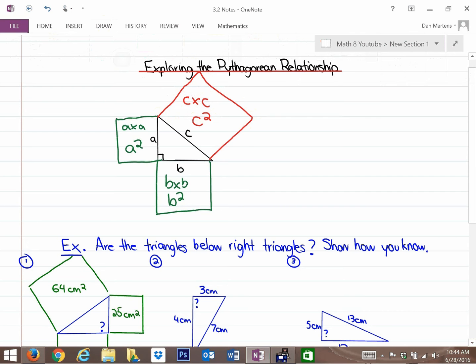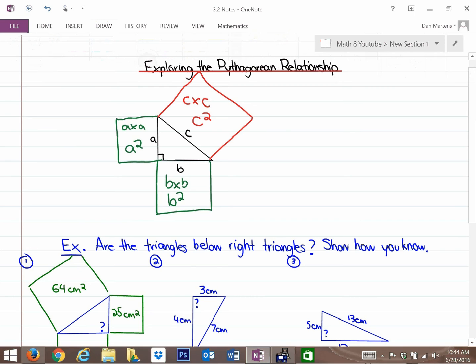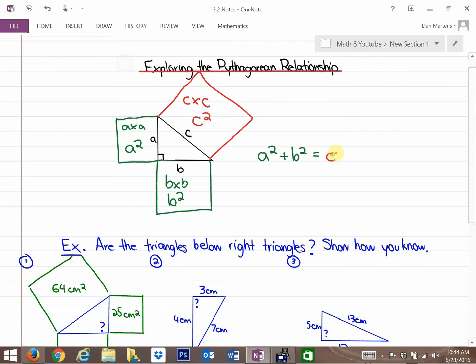And the relationship that we learned in this particular section, it's called the Pythagorean relationship, is if you take the two smaller areas, if it's a right triangle, and you add them, so the A squared plus the B squared, it will equal to the larger area if it's a right triangle. So that's the relationship that we explored.